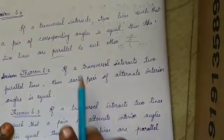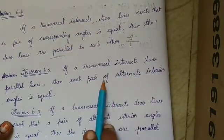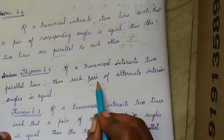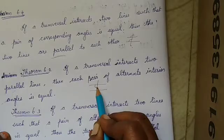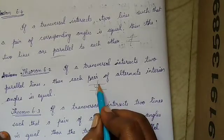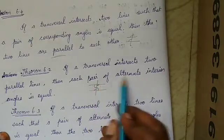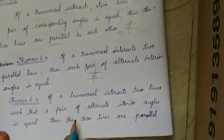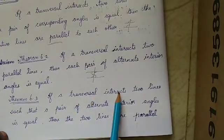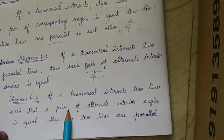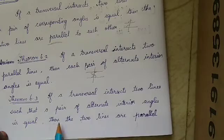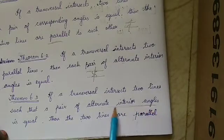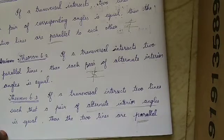Theorem 6.2: if a transversal intersects two parallel lines, then each pair of alternate interior angles is equal. If the transversal passes through parallel lines, the alternate interior angles are equal. Similarly, if alternate interior angles are equal, then the lines must be parallel. Both ways we can say the same statement.